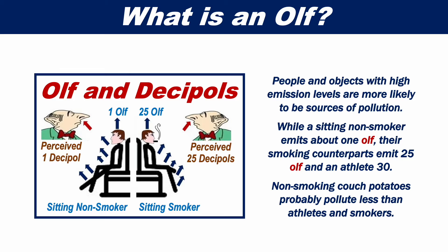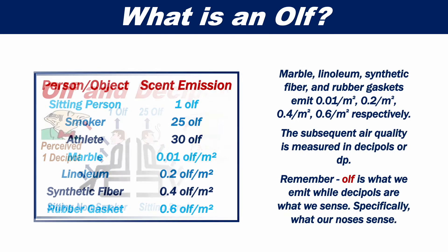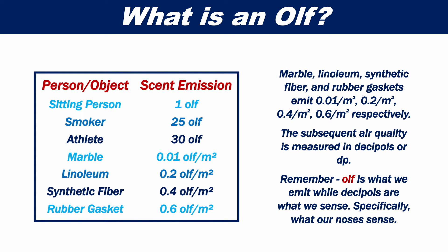While a sitting non-smoker emits about 1 olf, their smoking counterparts emit 25 olf and an athlete 30. Non-smoking couch potatoes pollute less than athletes and smokers. Materials such as marble, linoleum, synthetic fibre, and rubber gaskets also have varying levels of olf.